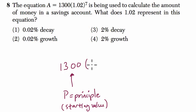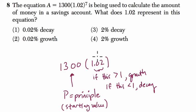It's being multiplied by 1.02. The rule is that if this number is greater than 1, then you have growth - you're going to be increasing. If this number is less than 1, then you have what's called decay or loss. 1.02 is larger than 1, so you have some growth.